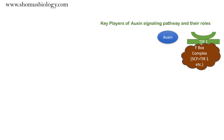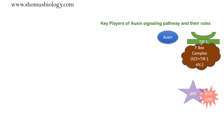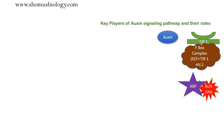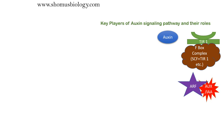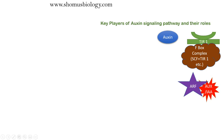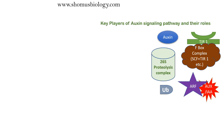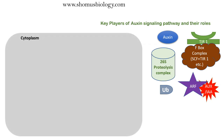TIR1 acts as an auxin binding receptor and also acts as an E3 ligase that can attach polyubiquitin to the target protein for its destruction. Then comes a regulator — particularly an inhibitor — that is ARF/AUX/IAA. ARF means Auxin Response Factor, which is a transcription factor that helps in transcribing genes necessary to provide response against auxin. AUX/IAA is the inhibitor of ARF; when ARF is associated with AUX/IAA, the AUX/IAA inhibits the function of ARF.